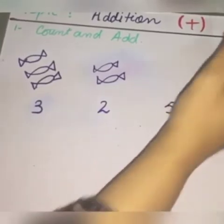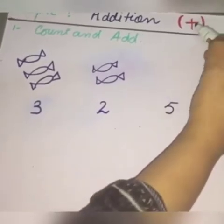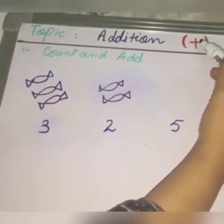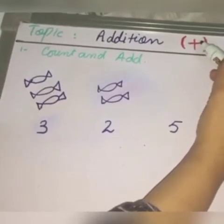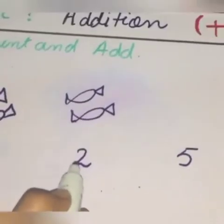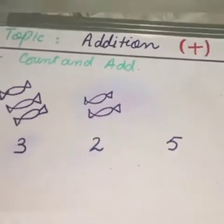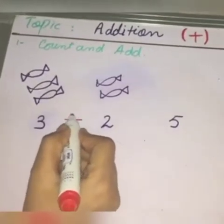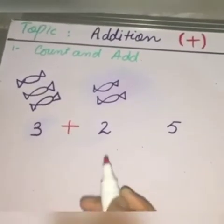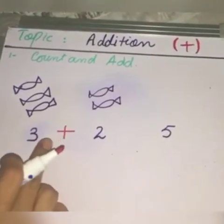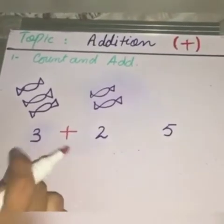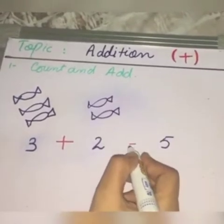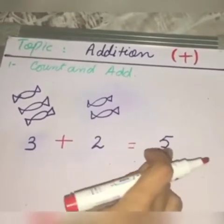Now this is the symbol of addition. When we add two numbers, we write a plus sign between them. Three plus two is equal to five.